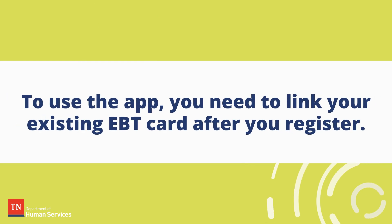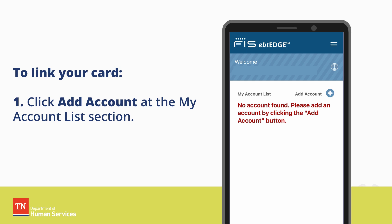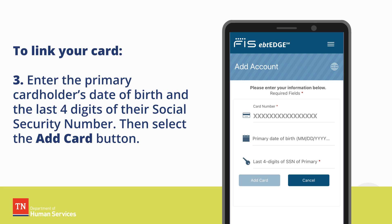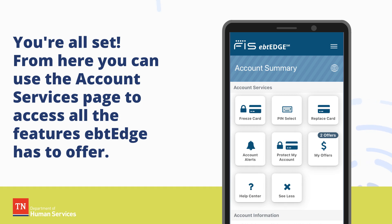To use the app, you need to link your existing EBT card after you register. To link your card, step one: click add account at the my account list section. Step two: enter the EBT card's 16-digit card number, then select next. Step three: enter the primary cardholder's date of birth and the last four digits of their social security number, then select the add card button. You're all set — you can use the account services page to access all the features EBT Edge has to offer.